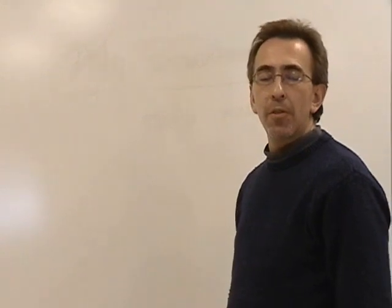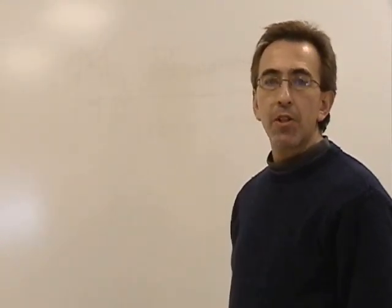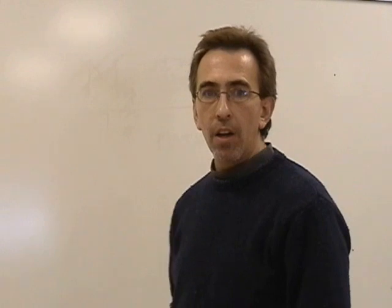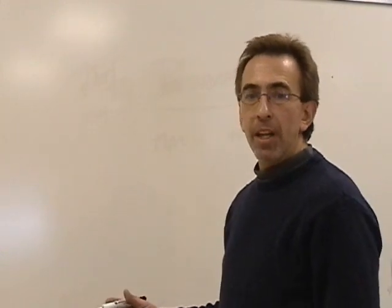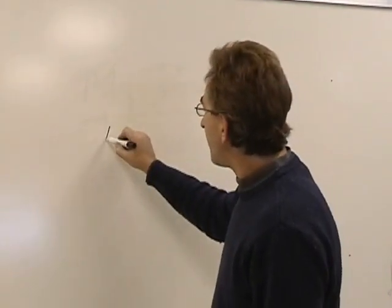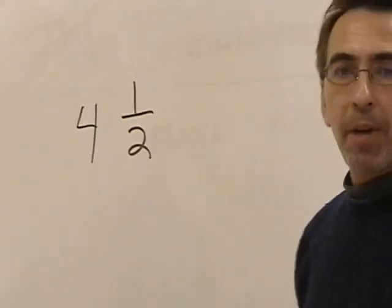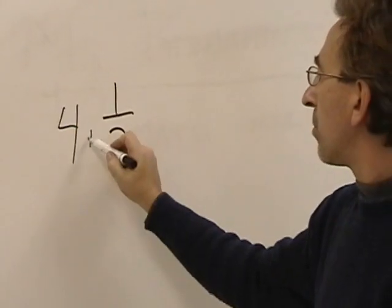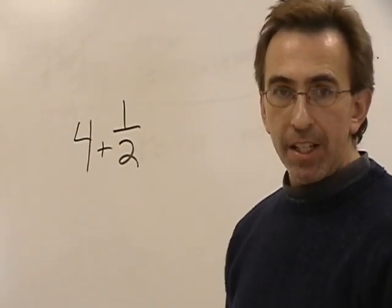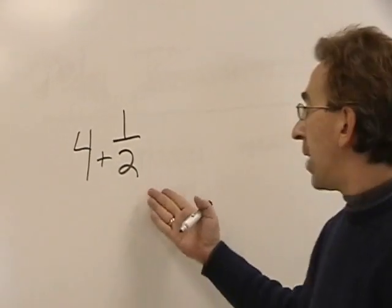The first thing that we have to establish is whether it's an odd or an even number. I'm going to start with even numbers because they are the easiest and make the most sense. If we take a number like 4 and 1 half, that's basically the same thing as saying 4 plus 1 half, so we can treat them as separate entities.